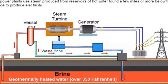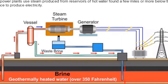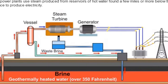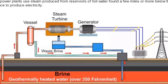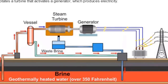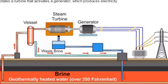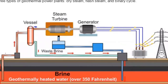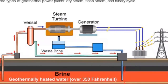Geothermal power plants use steam produced from reservoirs of hot water found a few miles or more below the earth's surface to produce electricity. The steam rotates a turbine that activates a generator which produces electricity. There are three types of geothermal power plants: dry steam, flash steam, and binary cycle.